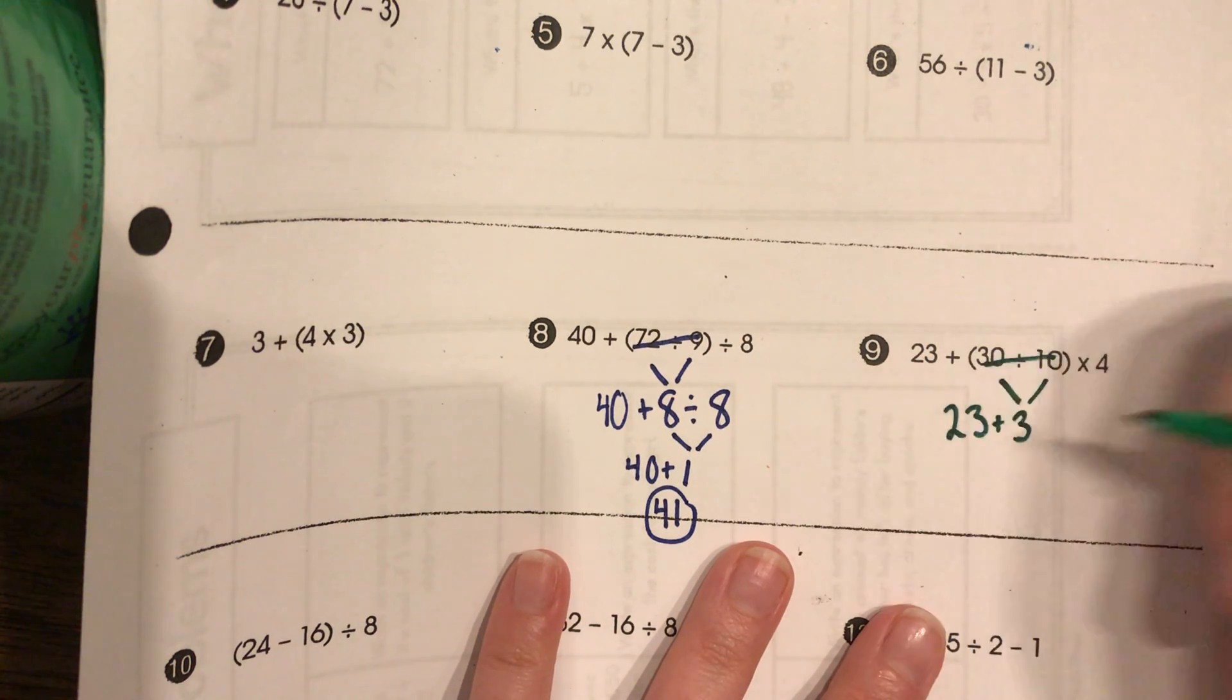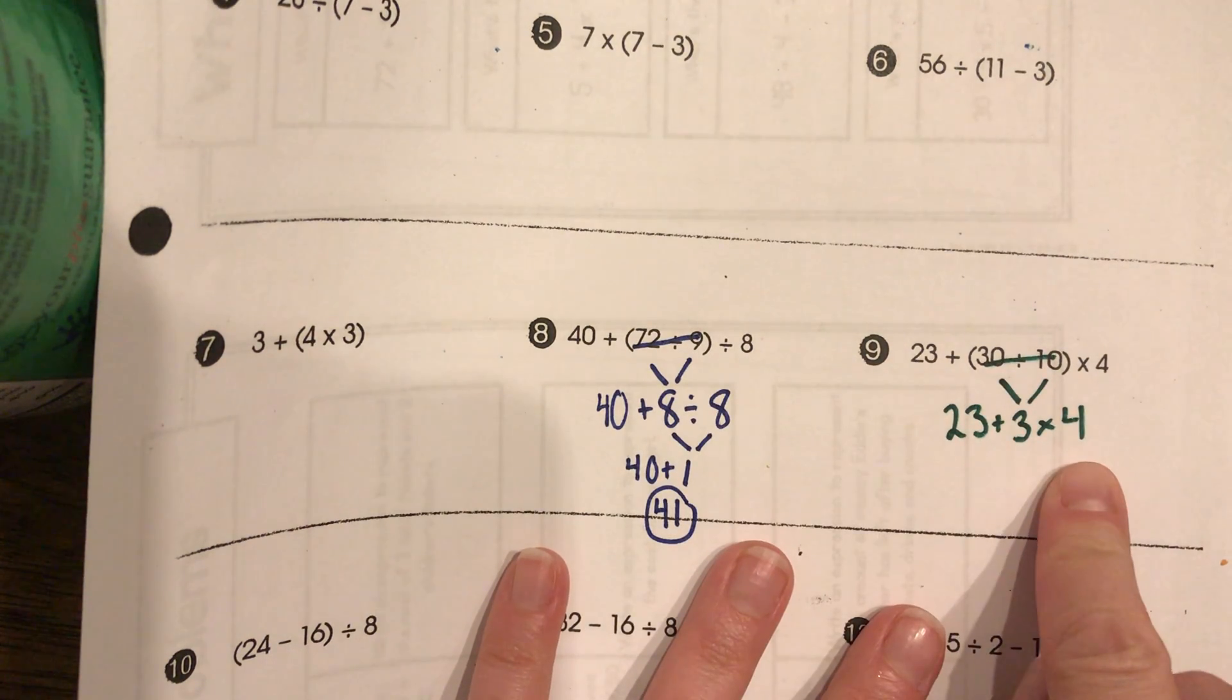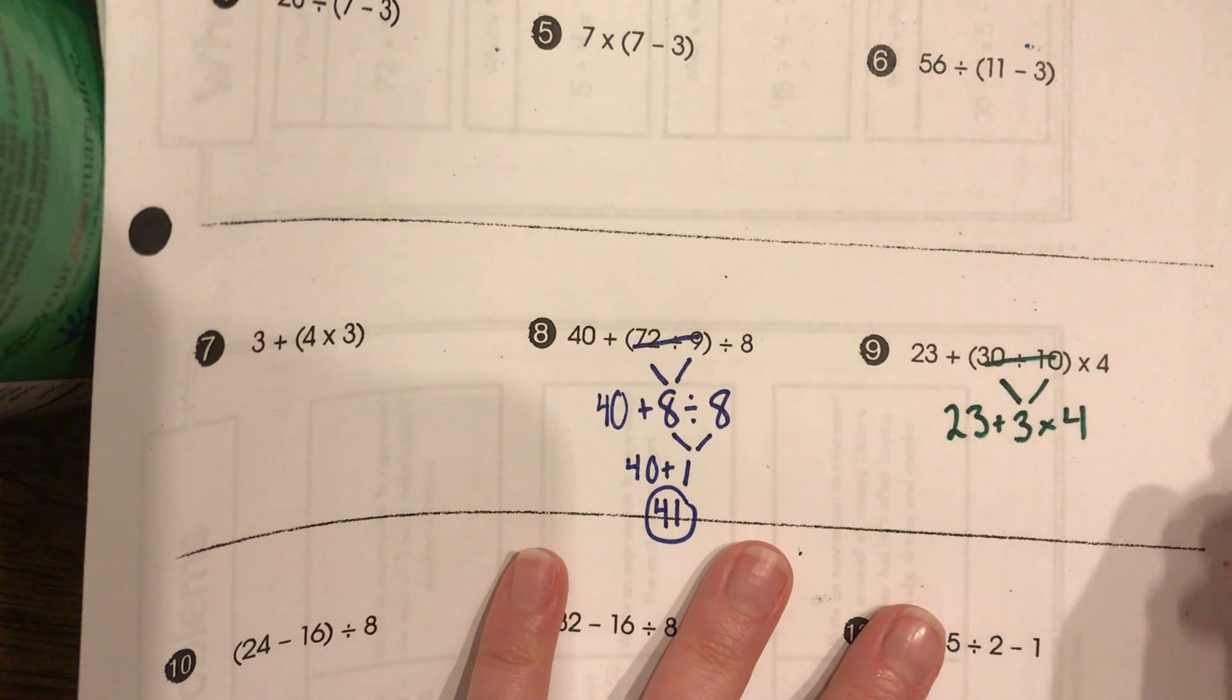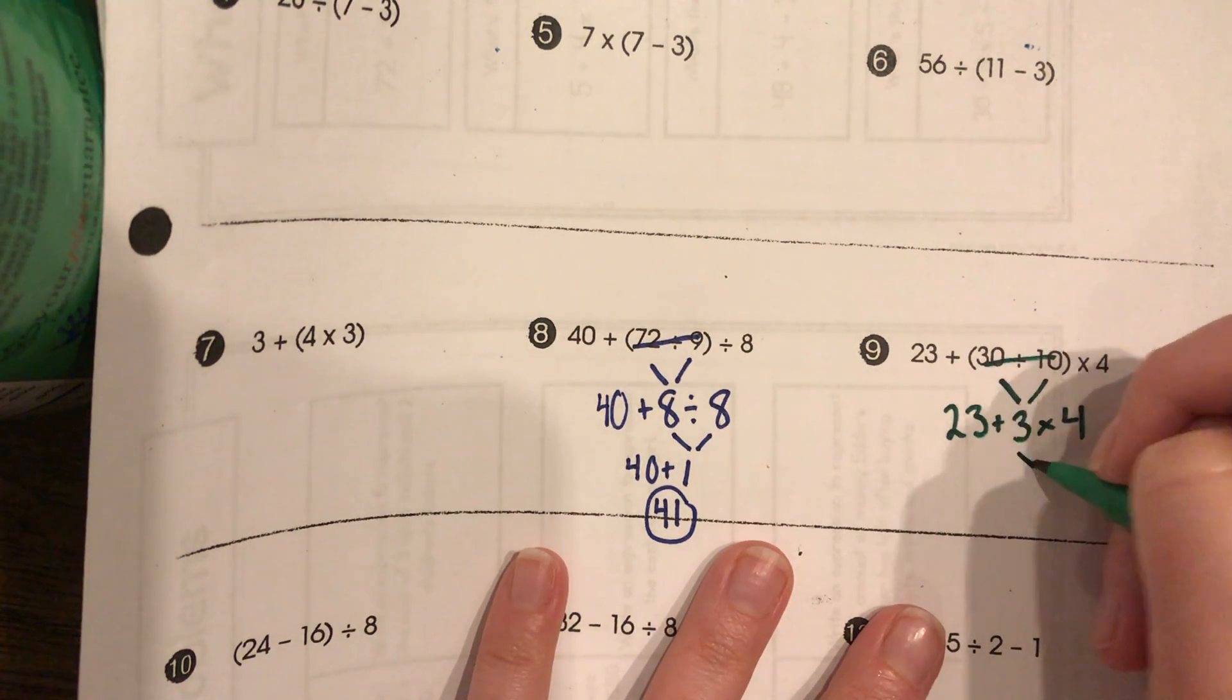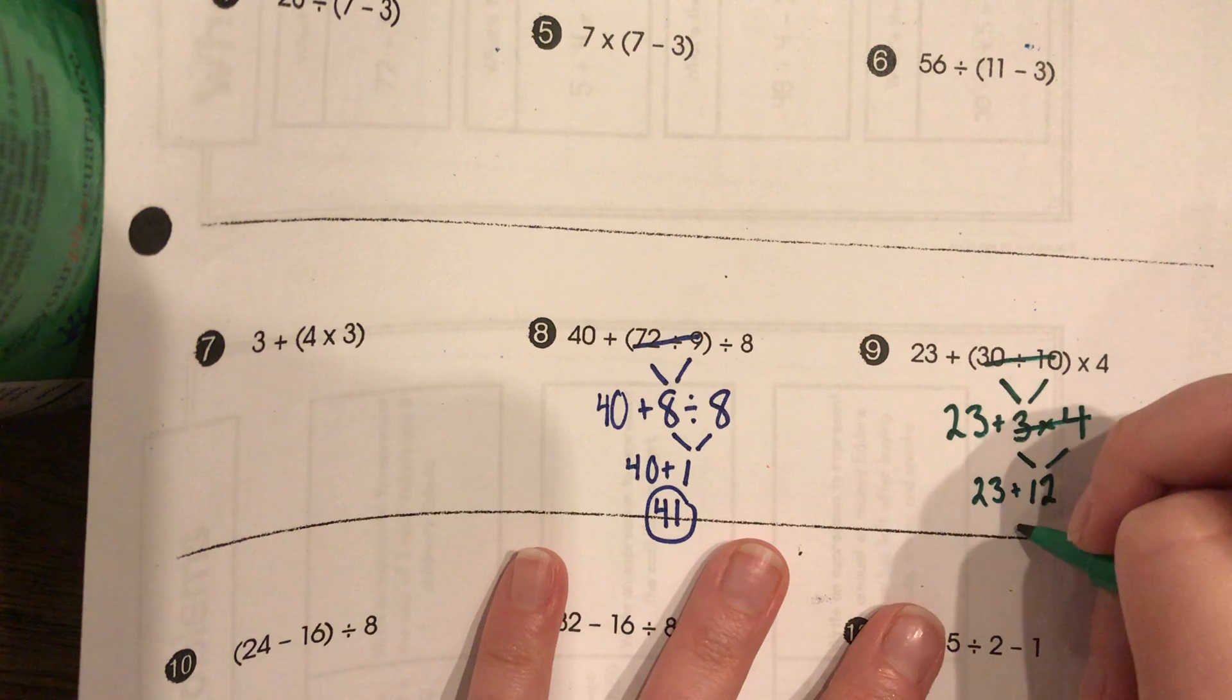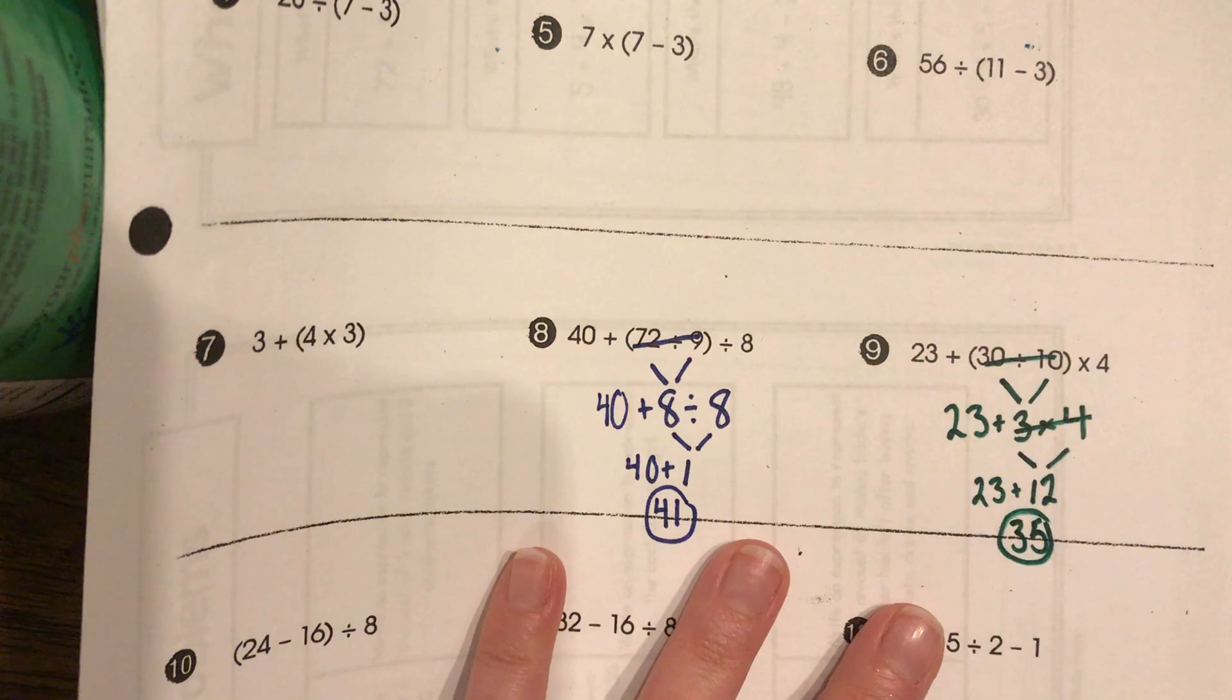So we have addition and multiplication, and the multiplication gets done before the addition according to the rules of PEMDAS. 3 times 4 is 12. Cross that out. 23 plus 12 is 35. Put your circle there.